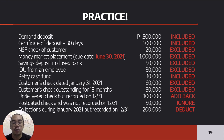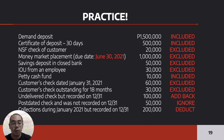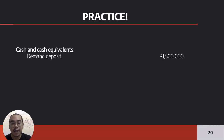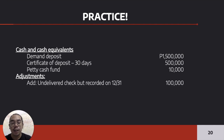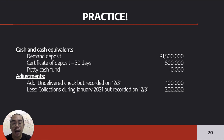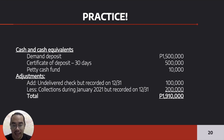To compute the cash and cash equivalents: demand deposits 1,500,000, plus certificate of deposit 500,000, plus petty cash fund 10,000. Adjustments: add back the undelivered check 100,000, and deduct the collections recorded early 200,000. Therefore, cash and cash equivalents equals 1,910,000.